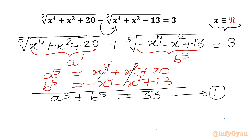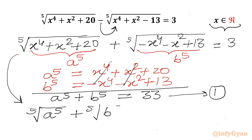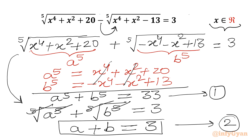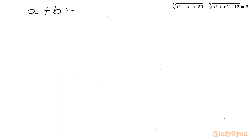Now the second equation I will get from the substitutions itself. Fifth root of a⁵ plus fifth root of b⁵ equals 3. The fifth root and power 5 cancel, so my second equation is: a + b = 3, with a⁵ + b⁵ = 33.